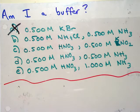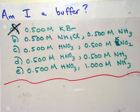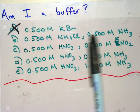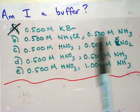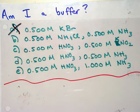Let's try the second one. Is B a good buffer? Yeah, B is pretty good. We've got an acid and its conjugate base, and they're both at relatively equal molarities. That one looks good. So B would be a buffer.